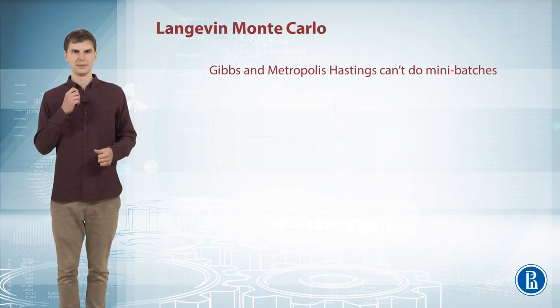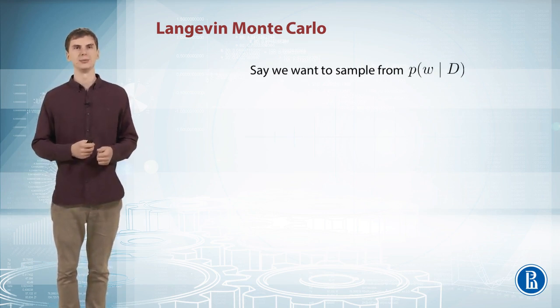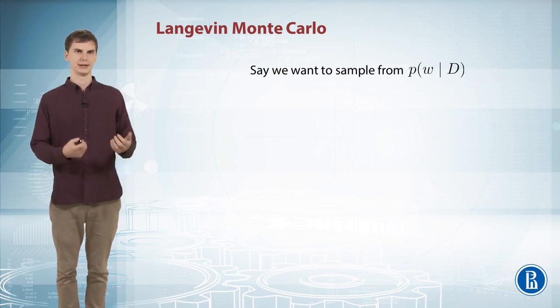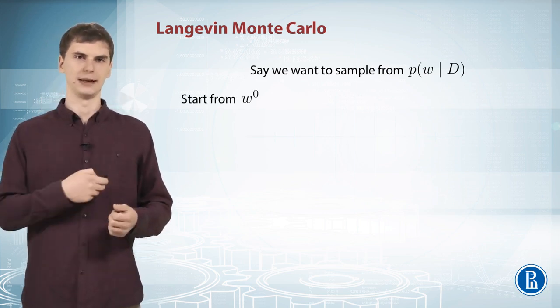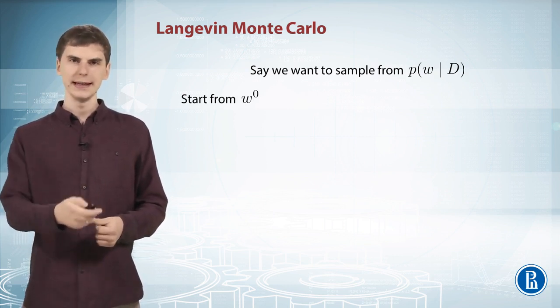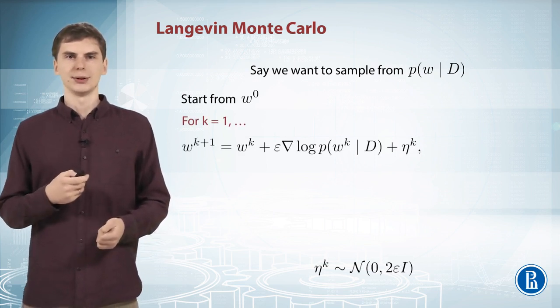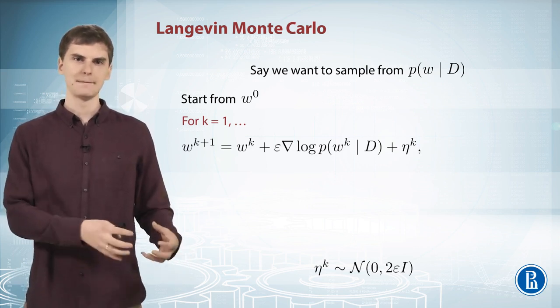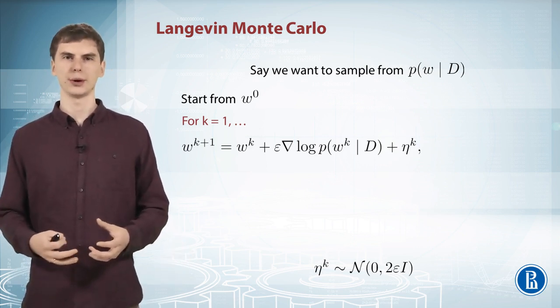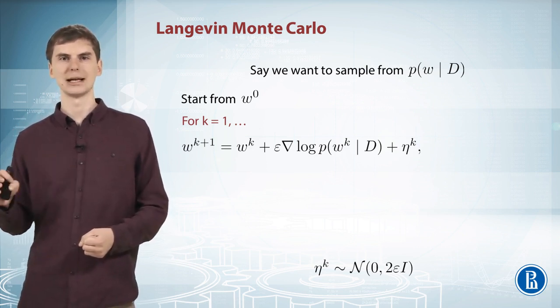And so it works as follows. Say we want to sample from the posterior distribution p of w given some data, so training data x-train and y-train. Let's start from some initial value for the weights w and then in iterations do updates like this. So here we update our w to be our previous w plus epsilon, which is kind of a learning rate, times gradient of our logarithm of the posterior plus some random noise.